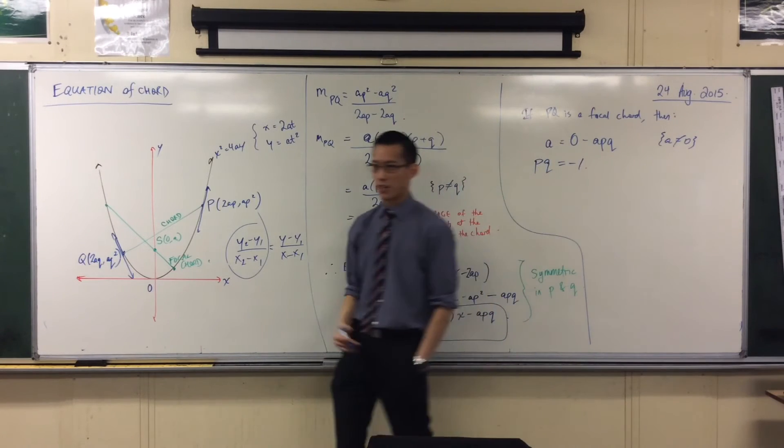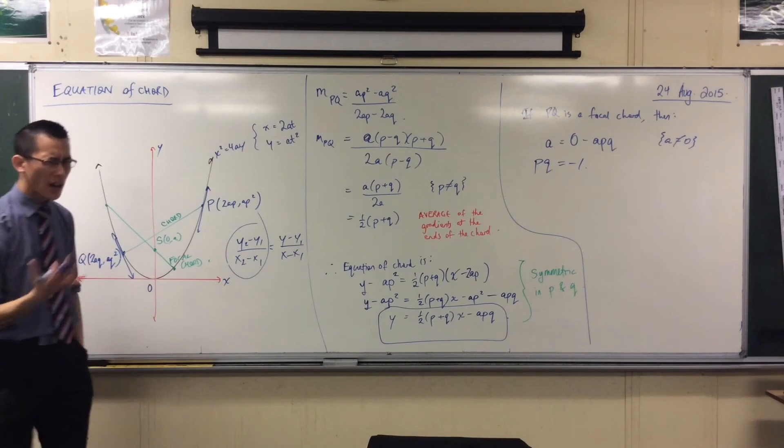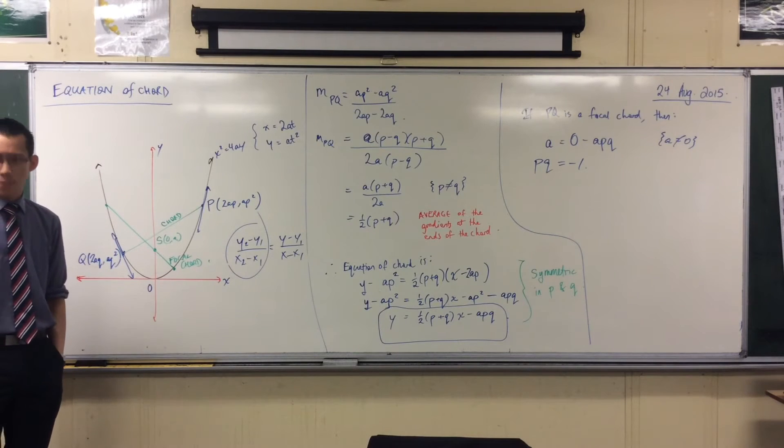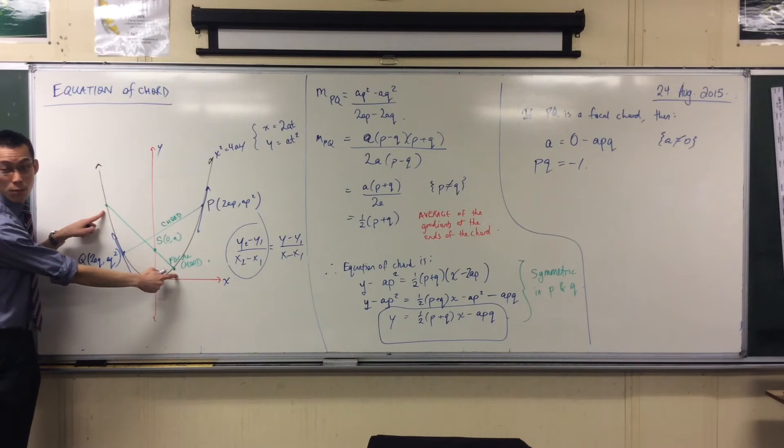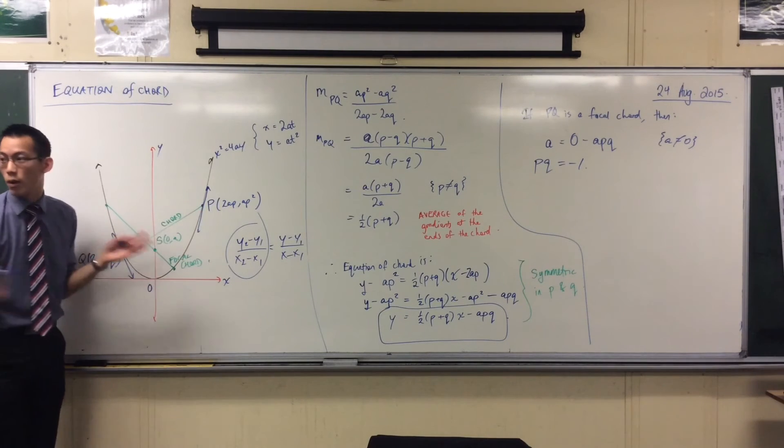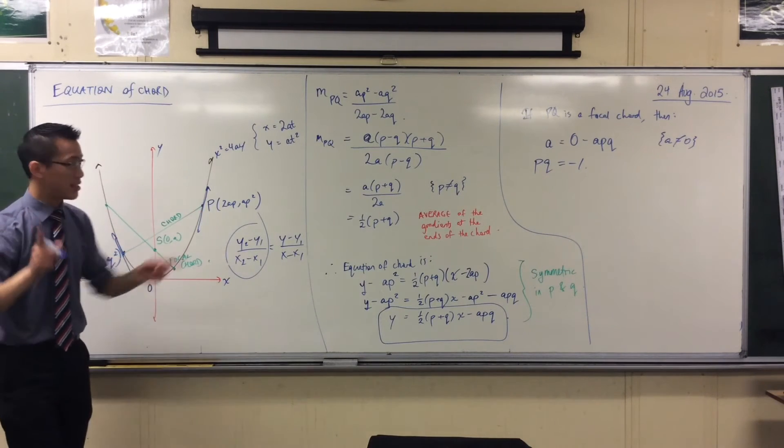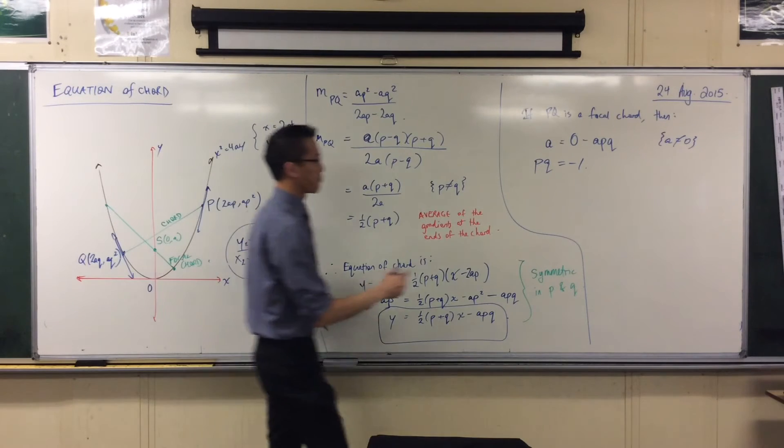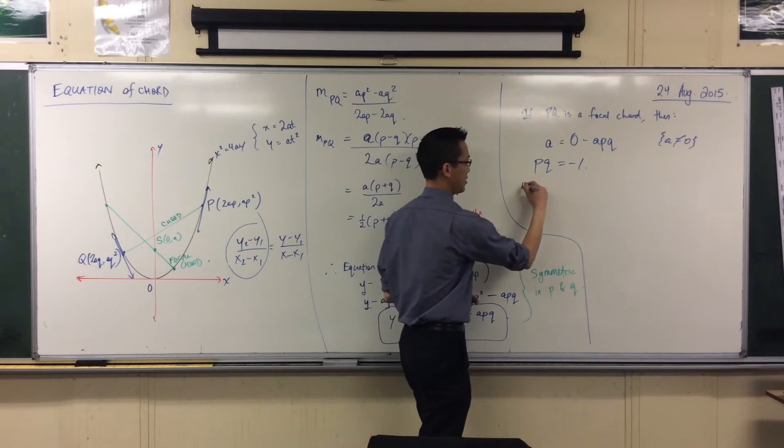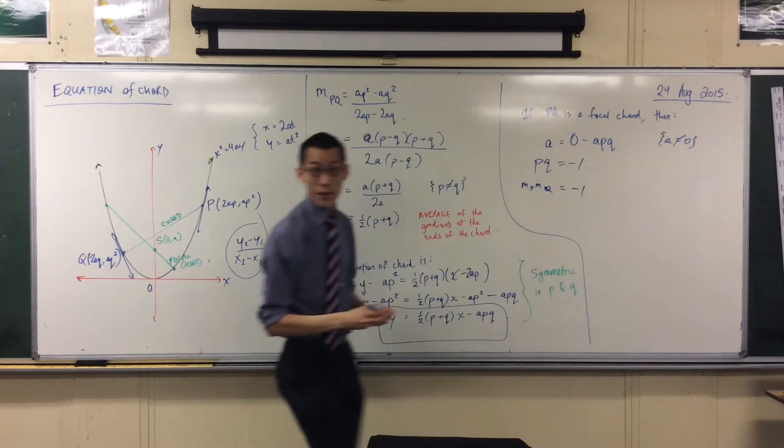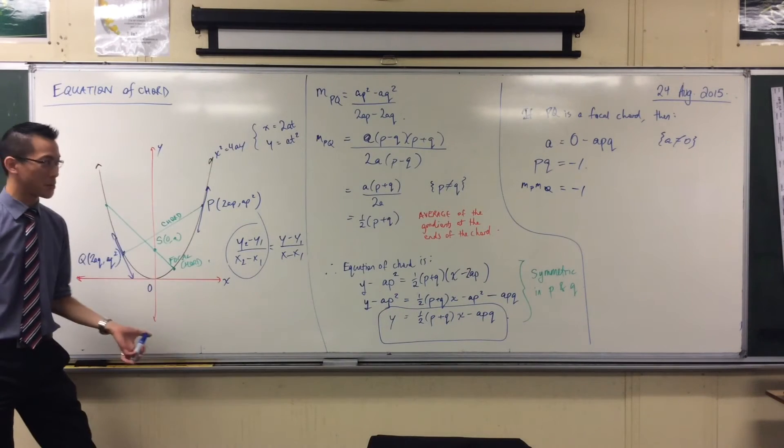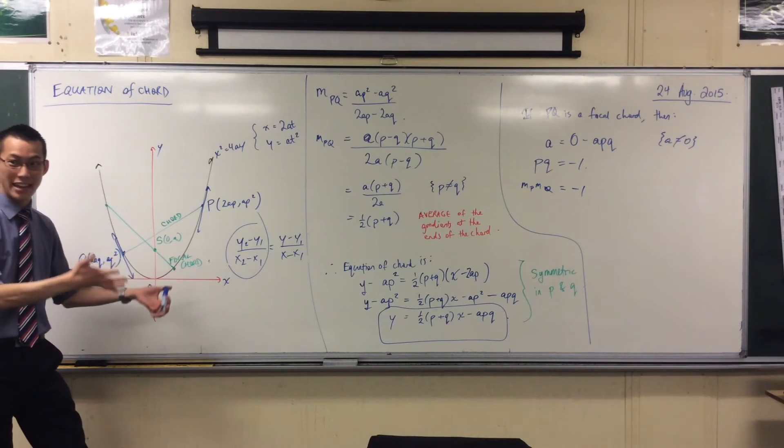Now, remember, we established last lesson, and I just remind you again this morning, what are P and Q? P and Q are the gradients of these two points. So what this is telling you, because these are gradients, this is this situation. That's what it really means. And of course, you know what it means when gradients multiply together to give negative 1.